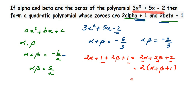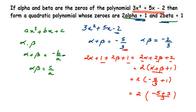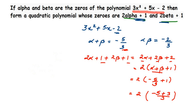Now I know alpha plus beta from the given polynomial 3x squared plus 5x minus 2. Substituting, we get 2 into (minus 5 by 3 plus 1), which equals 2 into (minus 5 plus 3 over 3) equals 2 into (minus 2 by 3), which equals minus 4 by 3. So the sum of the zeros is S equals minus 4 by 3.